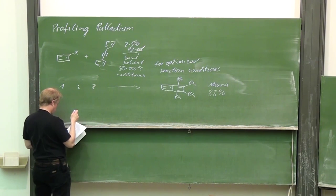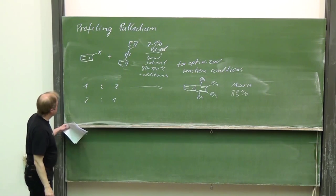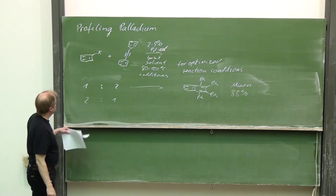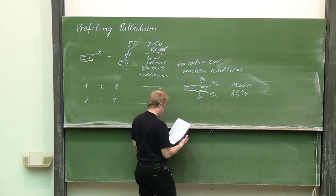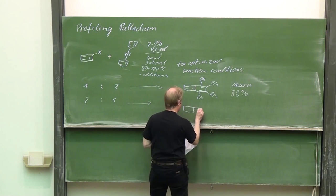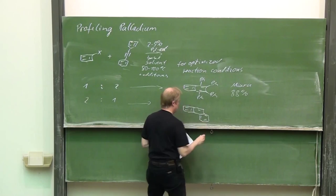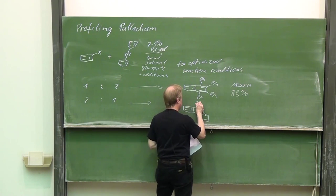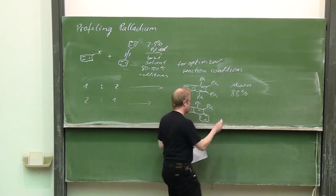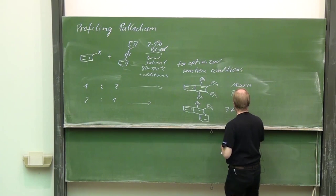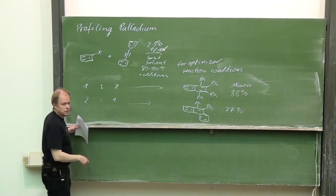The opposite ratio, two to one, so in excess of the aryl halide. In that case, it is possible to obtain a phenanthrene derivative, phenyl substituted in the positions nine and ten, 77 percent yield published by my group about 20 years ago.